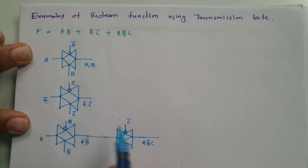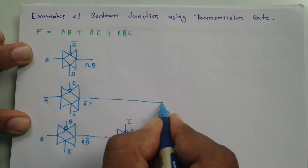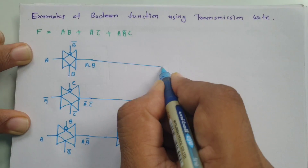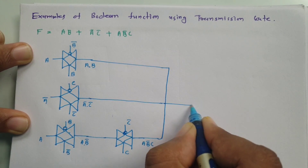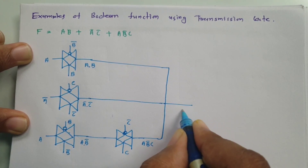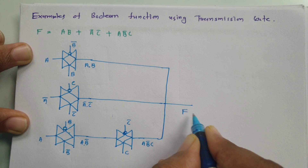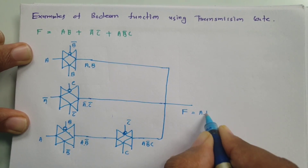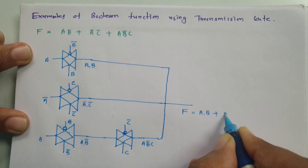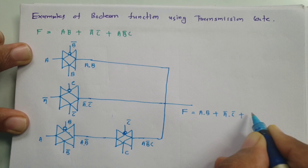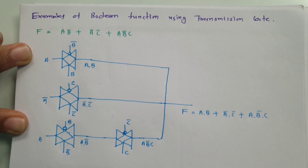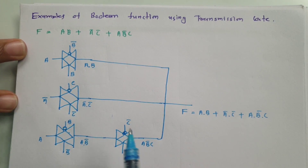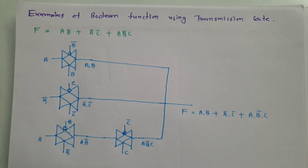Now I have three product terms, and we can directly connect them with a wire. By connecting all outputs with a wire, the function f is formed as a·b + ā·c̄ + a·b̄·c. This is how we can implement a Boolean function using transmission gates.